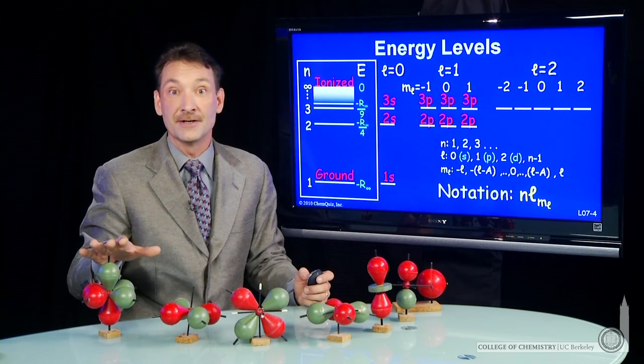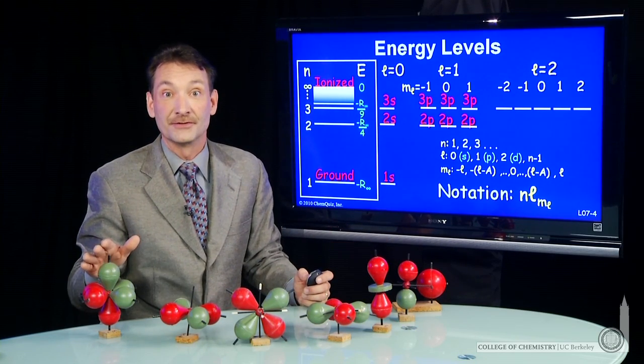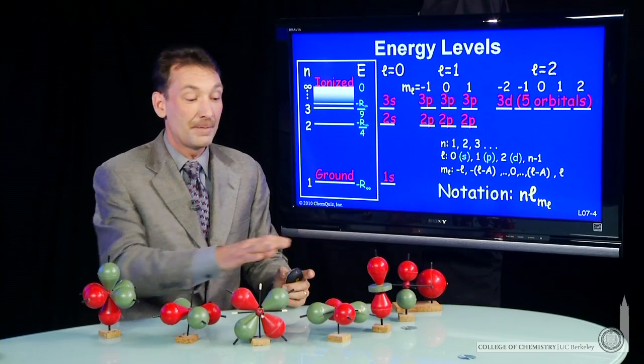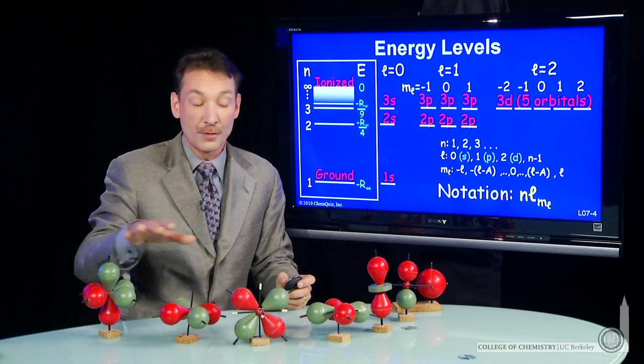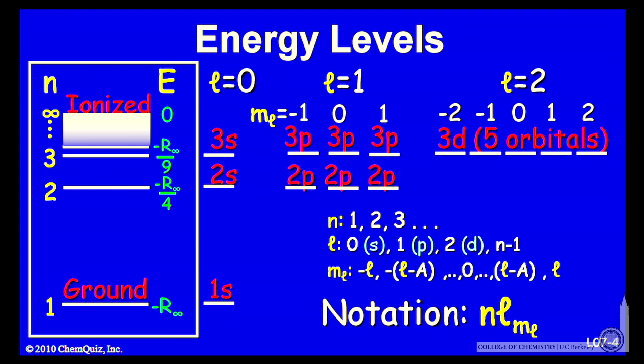And I have some models of them right here. So 1, 2, 3, 4, 5 d orbitals. They're equivalent in energy. And they make up the set of equivalent orbitals for n equal 3, l equal 2, and m sub l minus 2, minus 1, 0, 1, and 2.